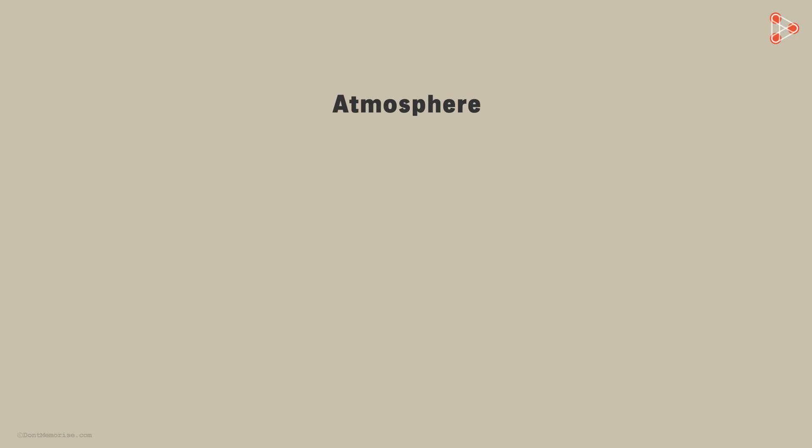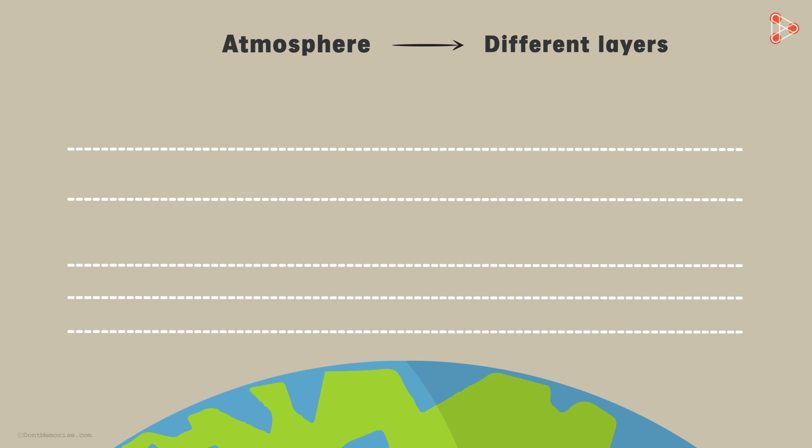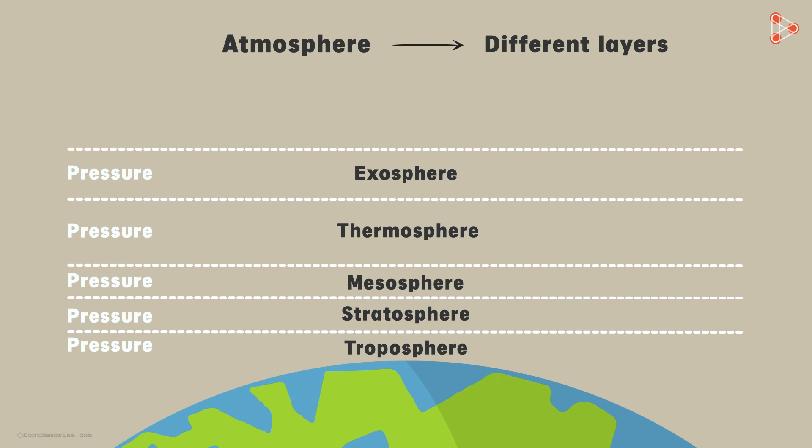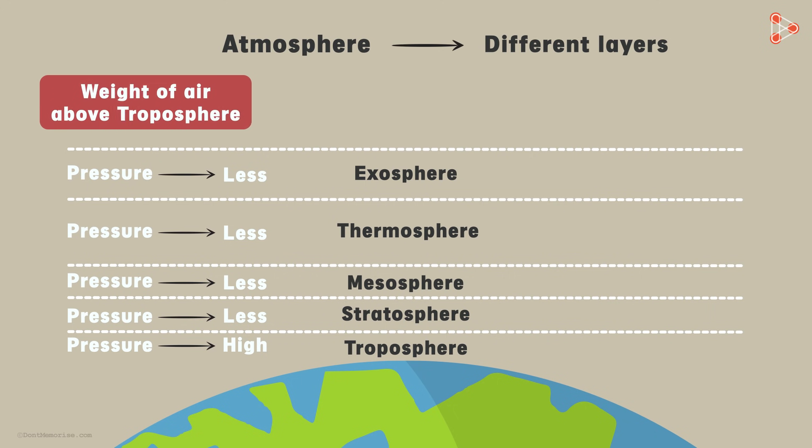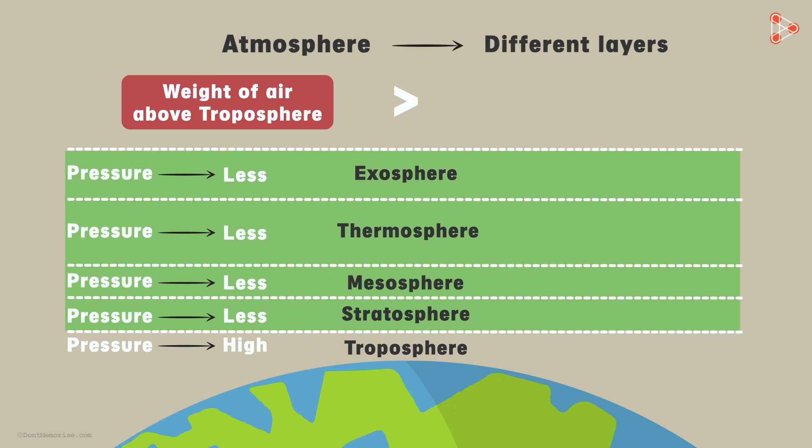Did you know that the atmosphere is divided into different layers? The atmosphere is divided into five layers, namely the troposphere, stratosphere, mesosphere, thermosphere, and exosphere. The pressure in the troposphere, which is the bottom-most layer, is higher than the pressure in the layers above it. And I'm sure you can guess the reason why. This is because the weight of the air above the troposphere is greater than the weight of the air above, say, the stratosphere.